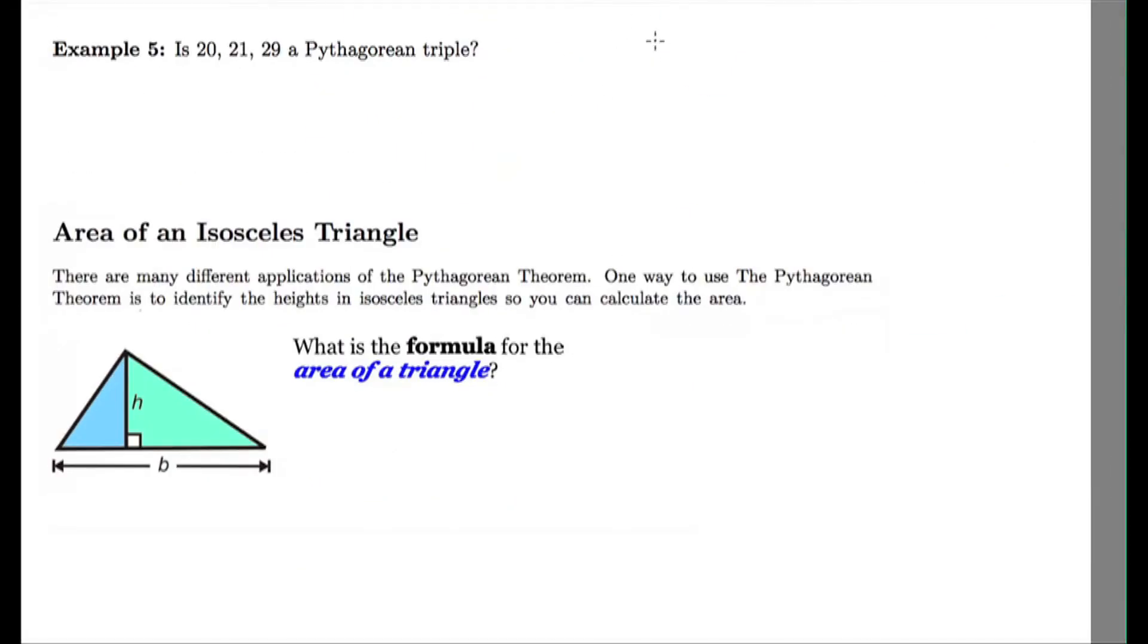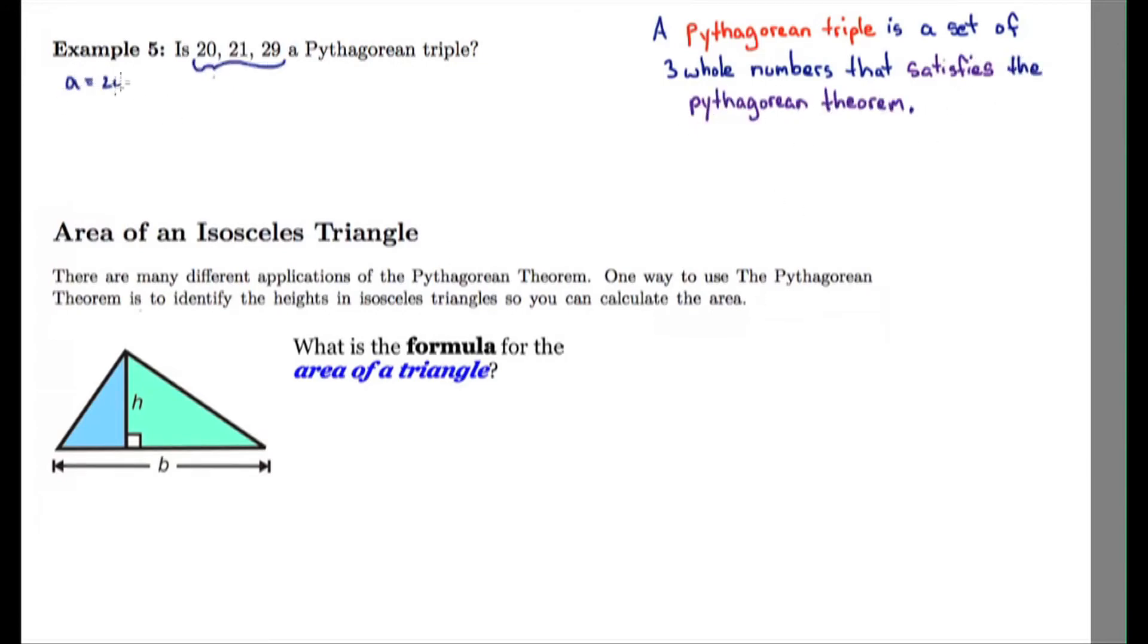Example 5. Is 20, 21, and 29 a Pythagorean triple? Okay, so what's a Pythagorean triple? A Pythagorean triple is a set of three whole numbers that satisfies the Pythagorean theorem. So we're going to test these three numbers here, these three lengths, into the formula and see if it works. So 20 and 21 must be A and B because they're the smallest lengths.